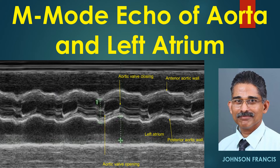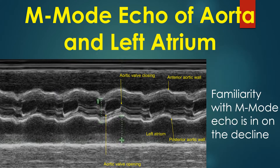M-mode echocardiogram of the aorta and left atrium. M-mode is short for time motion mode, where the X axis is time and the Y axis is the motion of the structure being imaged. Familiarity with M-mode echocardiography is on the decline. In the initial era of echocardiography, it was the only modality available. The M-mode echocardiogram at the aorta-left atrium level shows the anteroposterior movements of the walls of the aorta, along with the aortic valve opening and closing movements.